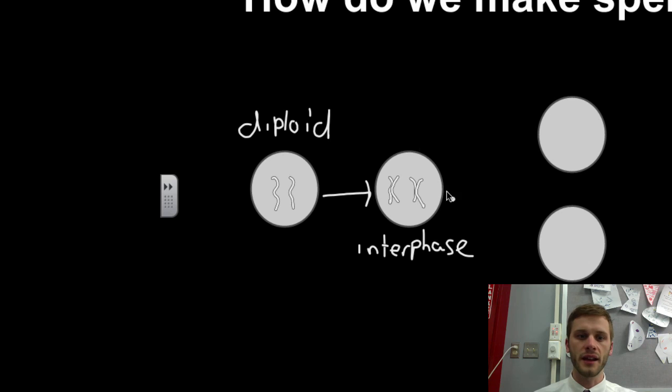So these two right here are going to divide into two cells. So these two chromosomes are going to go into this cell, and these two chromosomes are going to go to this cell.